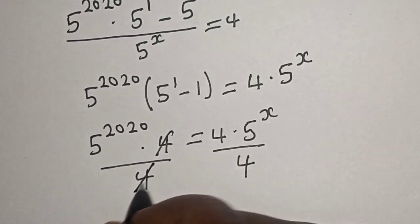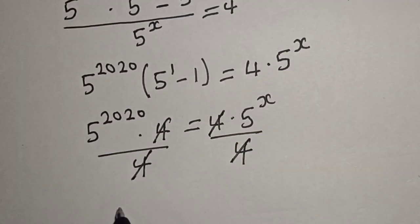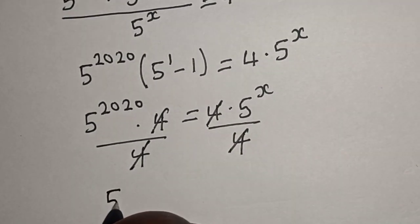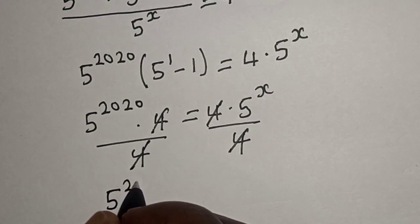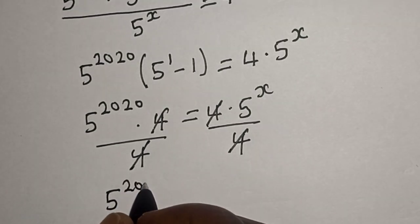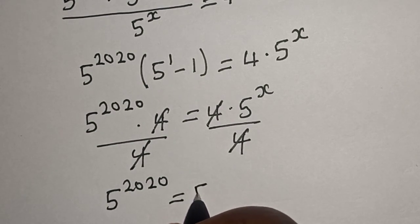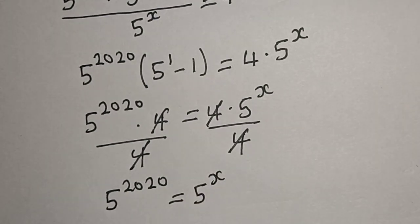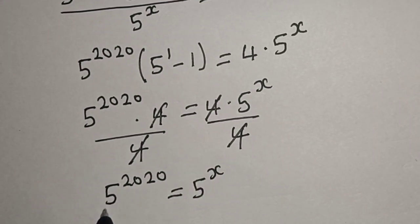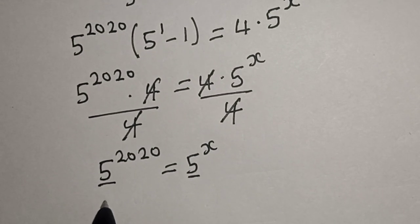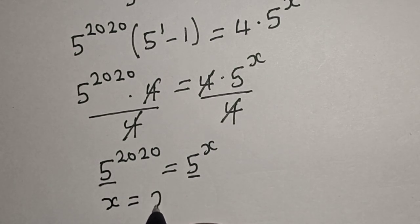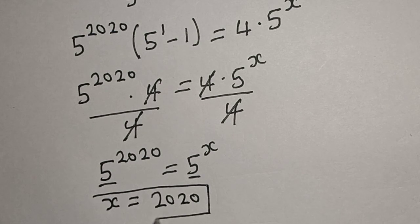Therefore, this one will cancel this, this one will cancel this. We have 5 raised to power 2020 is equal to 5 raised to power s. Then they have the same base, 5. Therefore, s is equal to 2020. That is our answer.